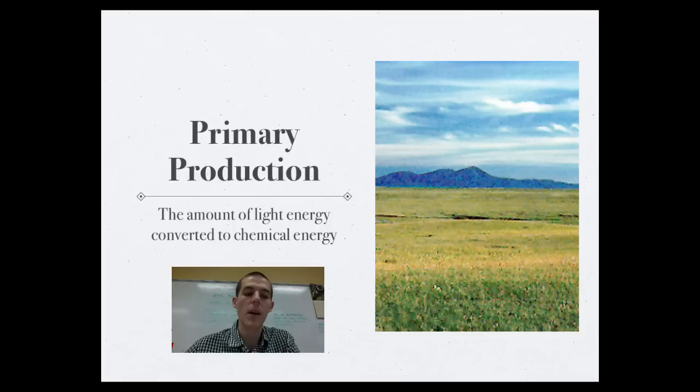First and second law of thermodynamics both play into this idea of primary production. And primary production is the amount of light energy that is converted to chemical energy. When we talk about primary production, we're talking about the amount of energy that a plant takes in from the sun and then subsequently stores in chemical molecules, generally carbohydrates.